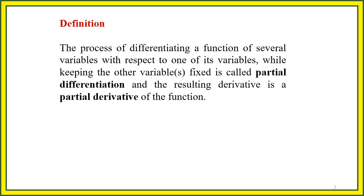The process of differentiation of a function of several variables with respect to one of its variables while keeping the other variables fixed is called partial differentiation, and the resultant derivative is a partial derivative of the function. If we have 2, 3, or 4 variables and want to differentiate with respect to only one, all others are treated as constants.